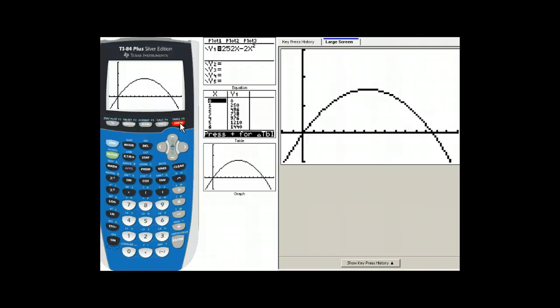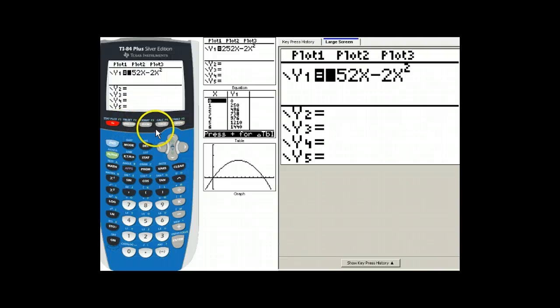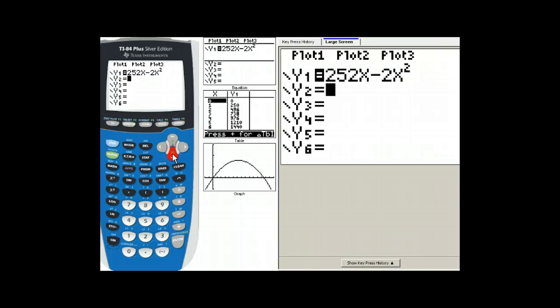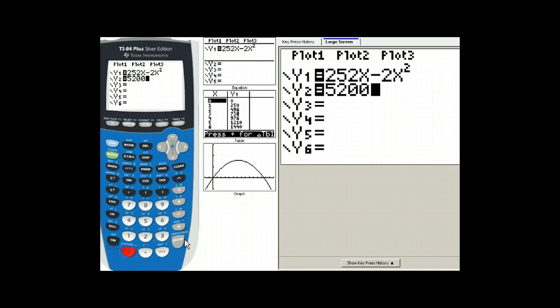Now part B asked for if we spent $5,200, how many tickets would that be? So I'm going to enter the equation Y = $5,200 into this and then take a look at the graph.